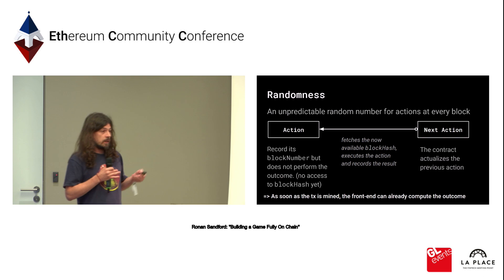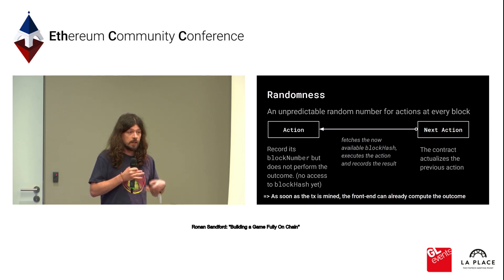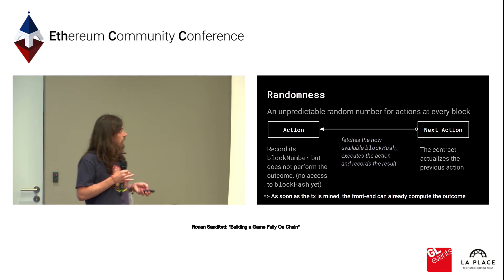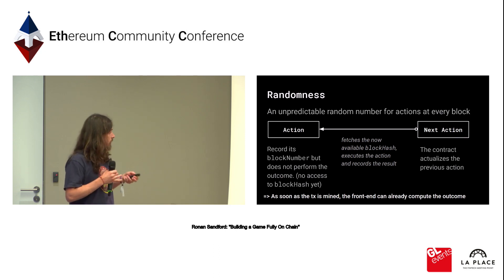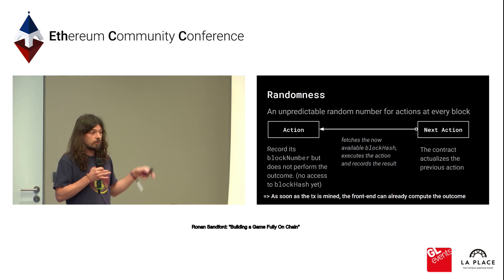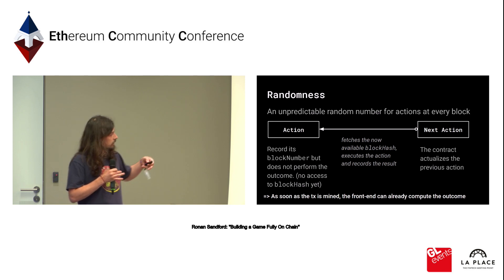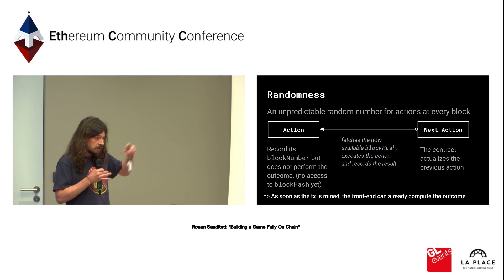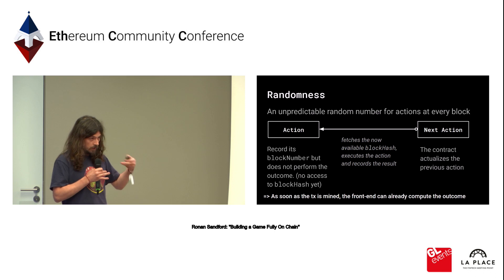On the technical side, we had to implement randomness for the procedurally generated aspect and the combat mechanism. For every action that requires randomness, you record the block number only — you don't perform the actual action, you just record the block number. As soon as the transaction is mined, the front-end can compute the outcome at that point, so we just need to wait one block. For the next action, the contract actualizes the previous action using the previous block hash to perform the outcome.